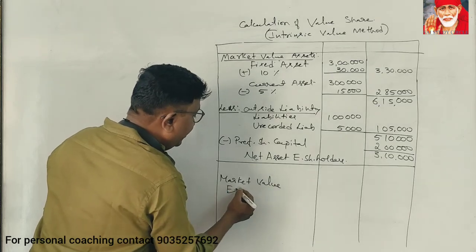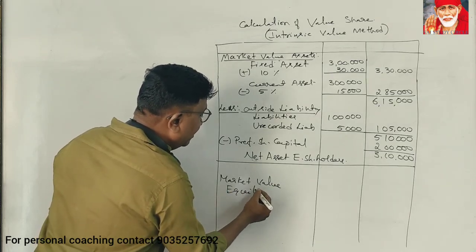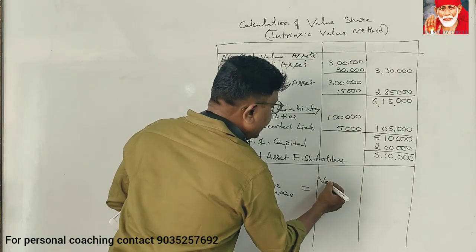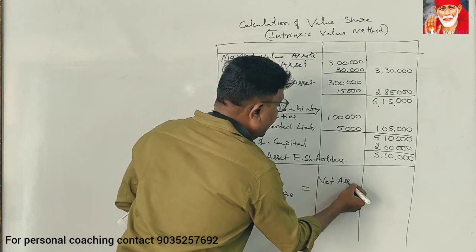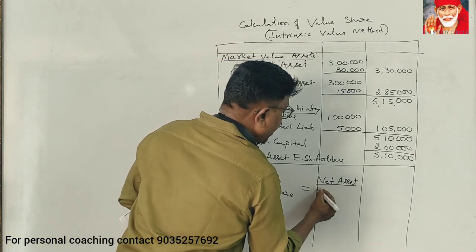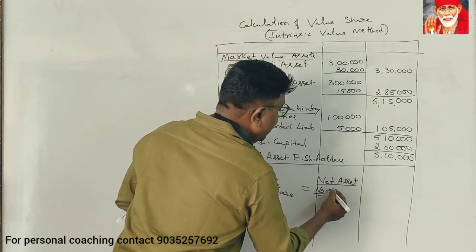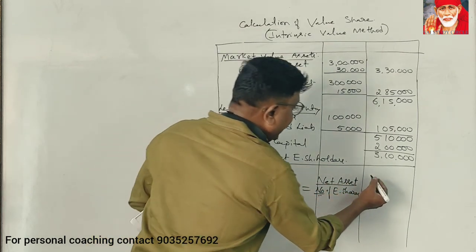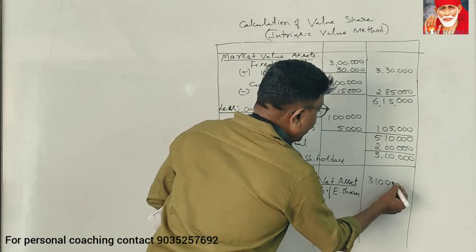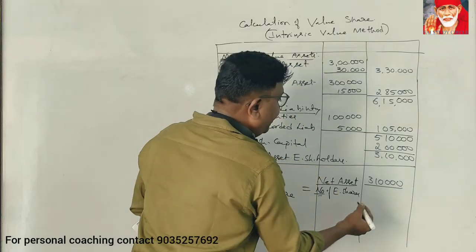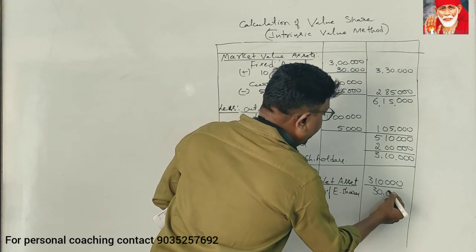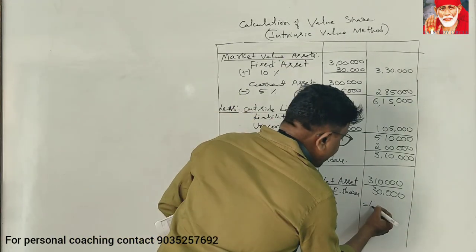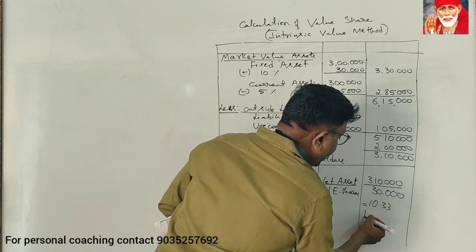The market value of equity share equals net assets divided by number of equity shares. The net assets figure is ₹3,10,000. The number of equity shares is 30,000. Therefore, the net asset value per share is ₹10.33.